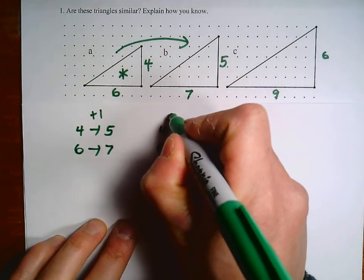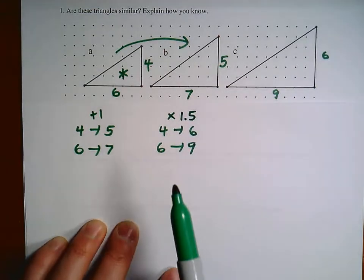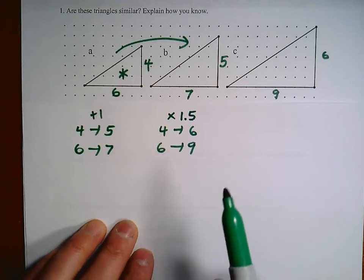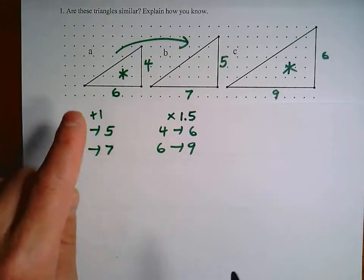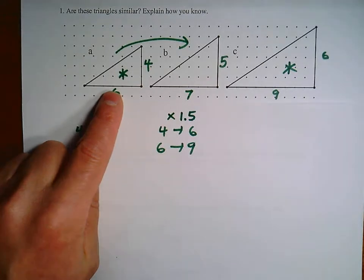So it appears here that this is a multiplicative relationship, one and a half. So you would have to take all of four and then half of it, which is two, and that would give you the six. So I'll put an asterisk here because it appears triangle one and triangle three, that these are similar.